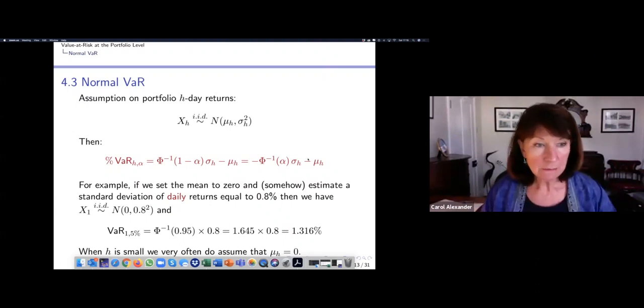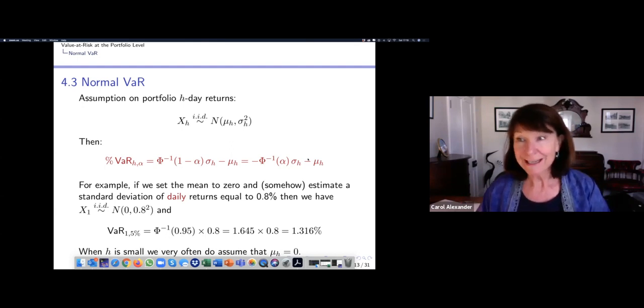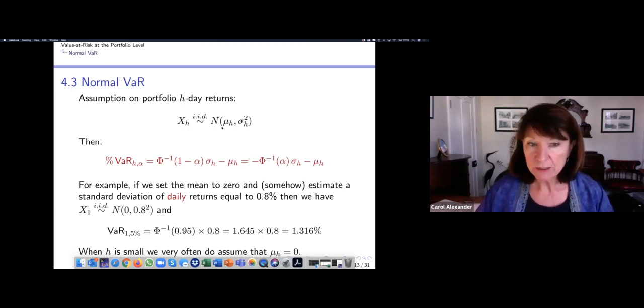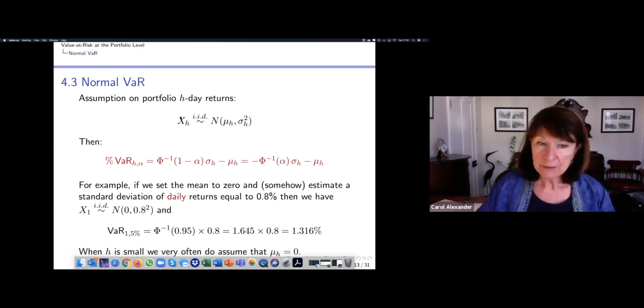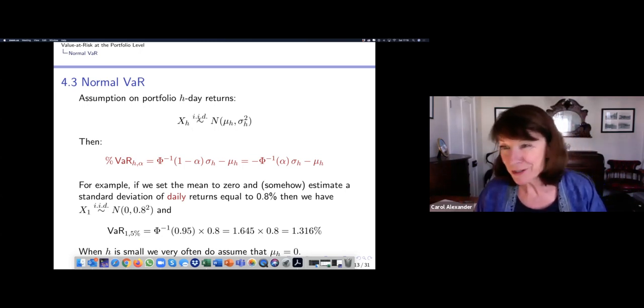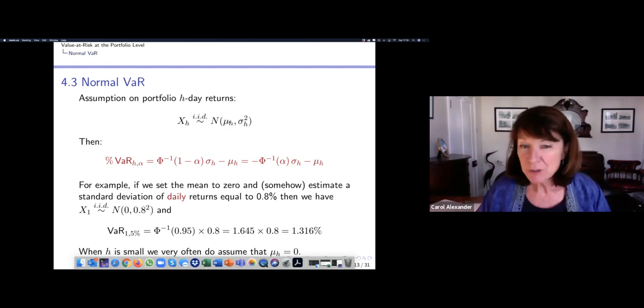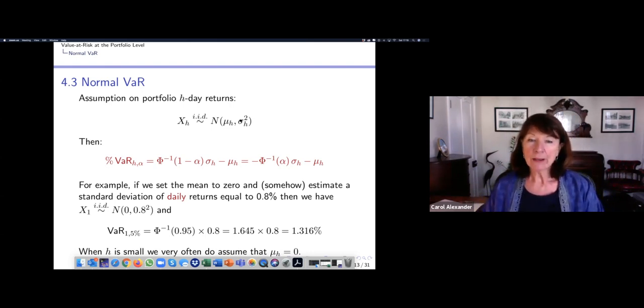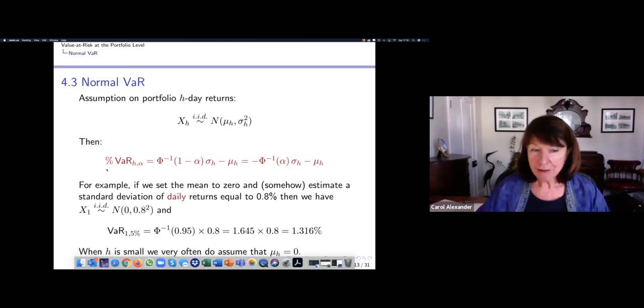As I said in the previous video, the assumption is that the portfolio returns, the h-day discounted portfolio returns, have a normal distribution with parameters mu_h and sigma_h squared. X is the random variable of h-day returns for the portfolio. We assume that whatever point in time we measure them, they're always the same mu_h and sigma_h squared for the parameters. They're IID.